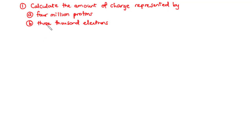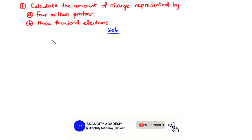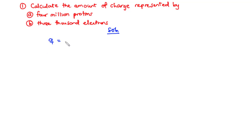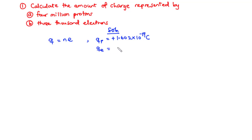Calculate the amount of charge represented by: A) 4 million protons, and B) 3,000 electrons. From this question, we want to find the amount of charge. We know that the amount of charge Q is given by the integer multiple of the elementary charge — that is N times Q. The charge per proton is +1.602 × 10⁻¹⁹ coulombs, and the charge per electron is −1.602 × 10⁻¹⁹ coulombs. They have the same magnitude; only the sign differs.